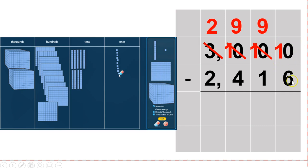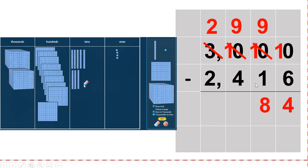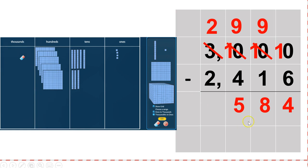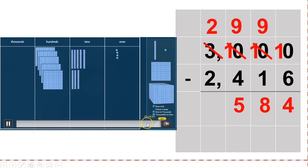Now I'm ready to subtract. I can take six away from that ten, leaving me with four. I can take the one away from the nine — that's eight. I can take four away from nine, leaving me with five. And if I take two away from the thousands, I don't have any thousands left. So my answer, or my difference, is 584.